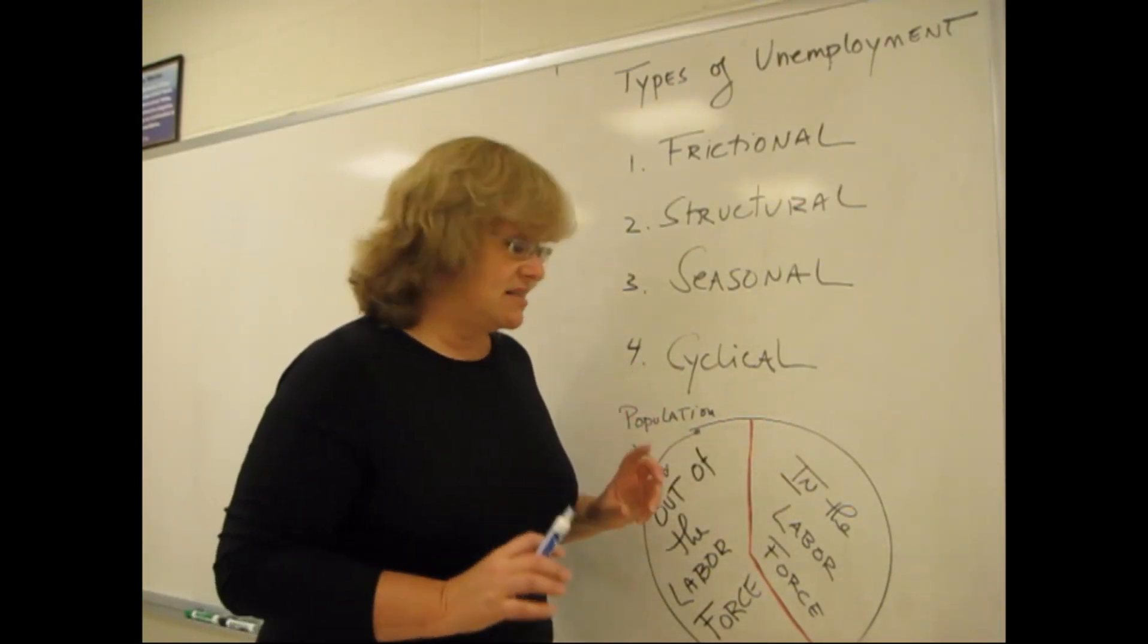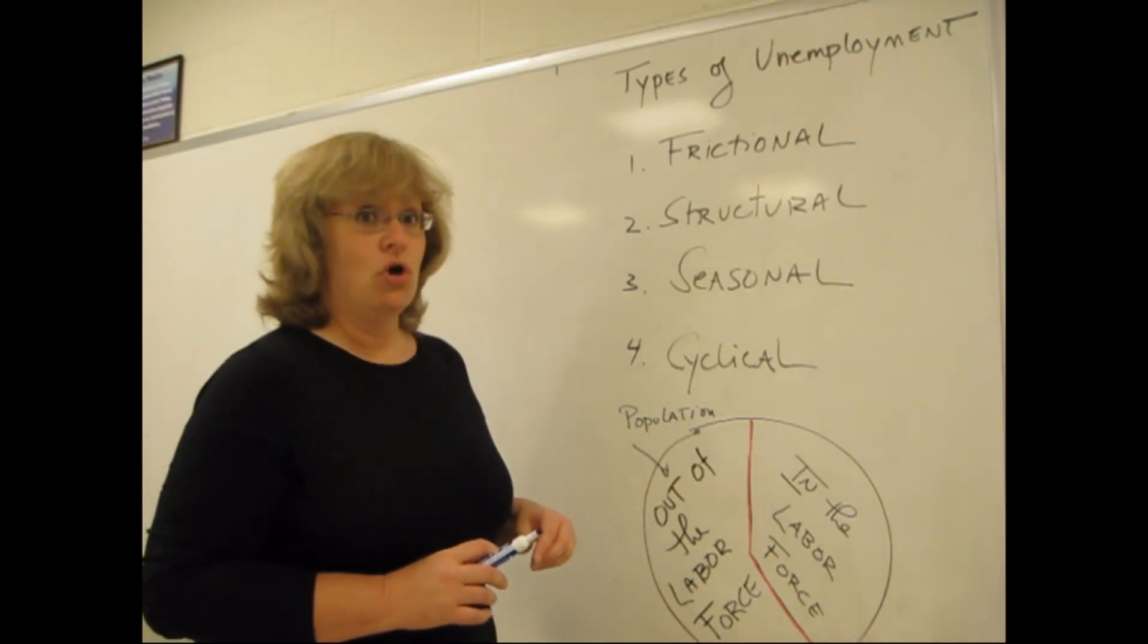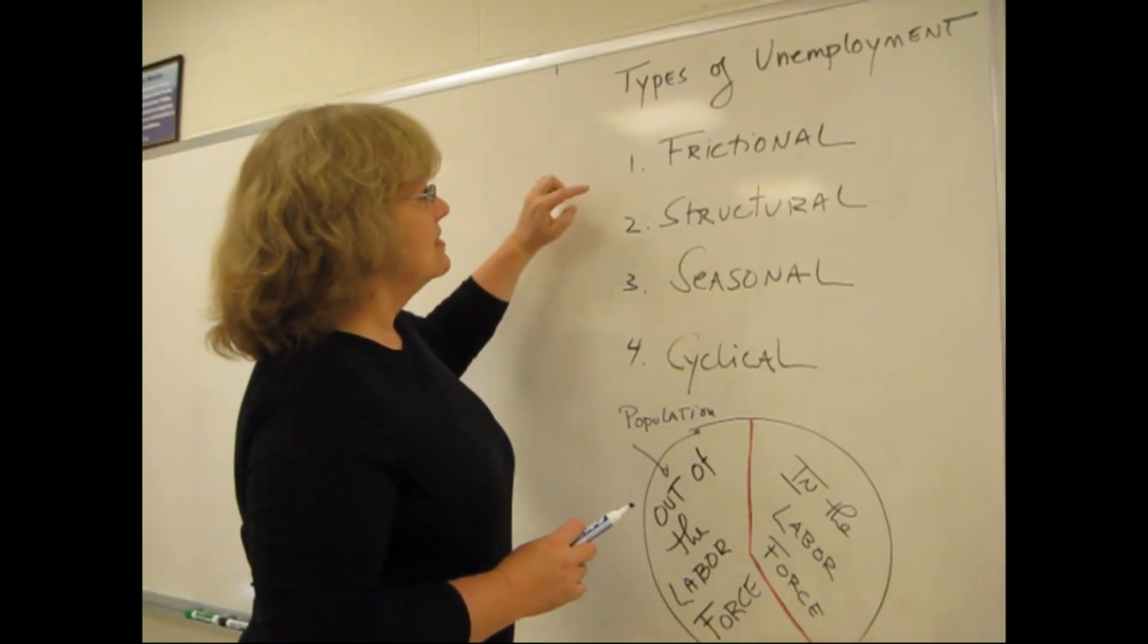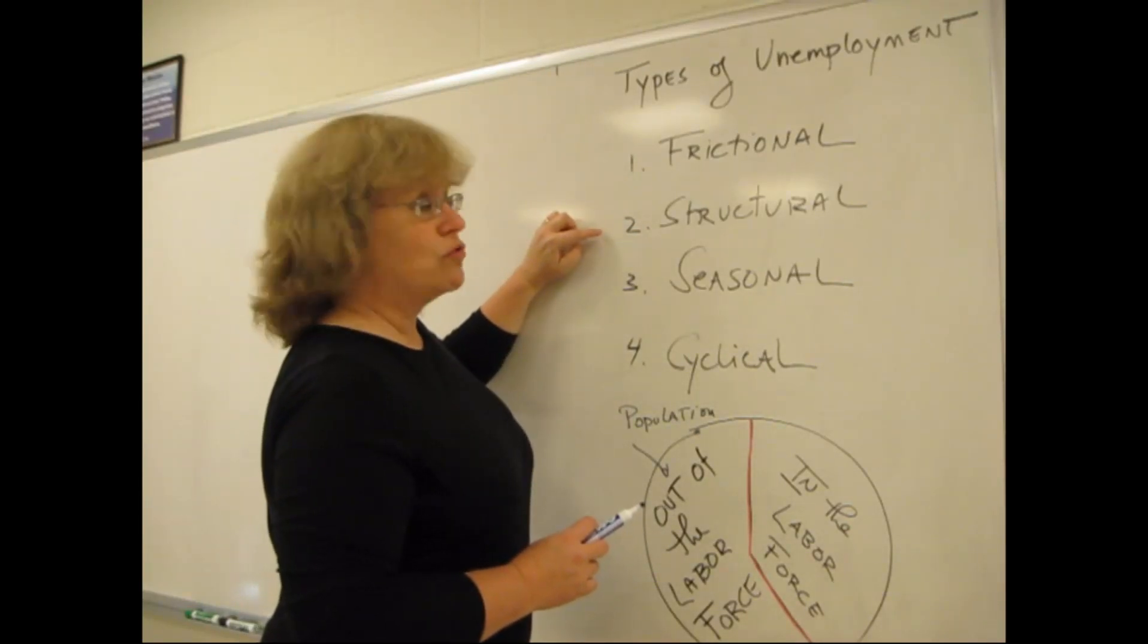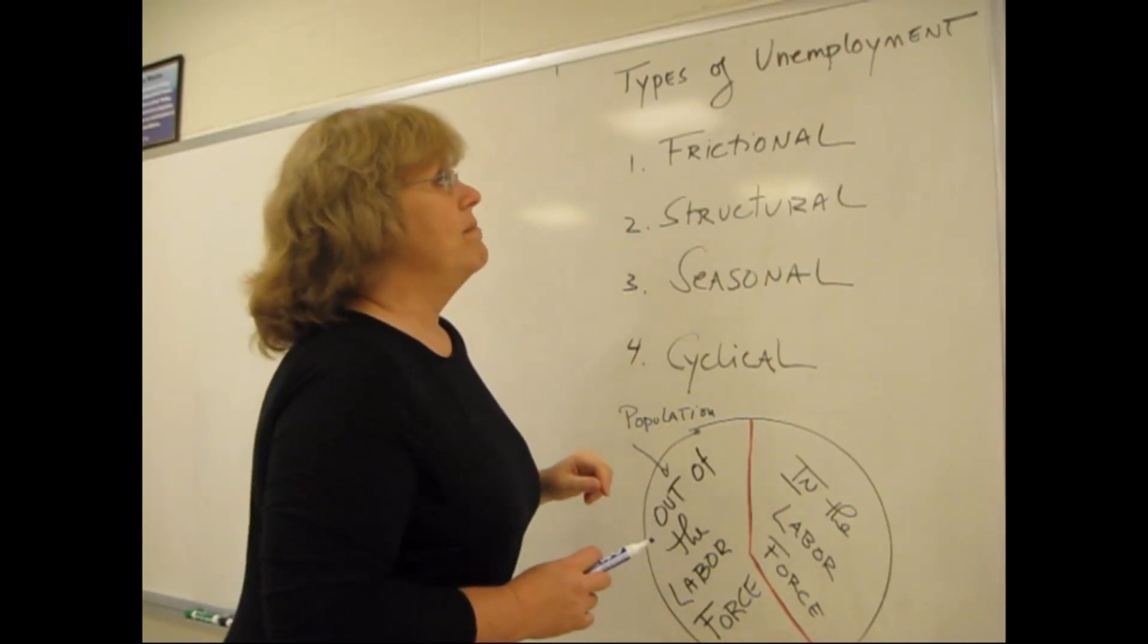So, that's one thing to consider here. We're talking about the labor force when we're talking about the kinds of people who are unemployed. Now, looking up at my list here, we've got four types. Frictional, structural, seasonal, and cyclical. We're going to talk about them one by one.